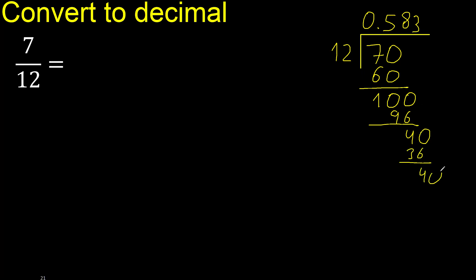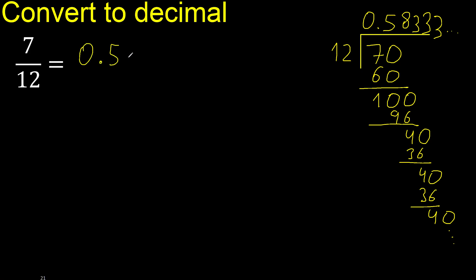Subtract and complete. Remainder is 40 again — 12 multiplied by 3 is 36. This repeats, so 3 repeats. After the decimal point, 3 is repeating. The answer is 0.5833... with 3 repeat.